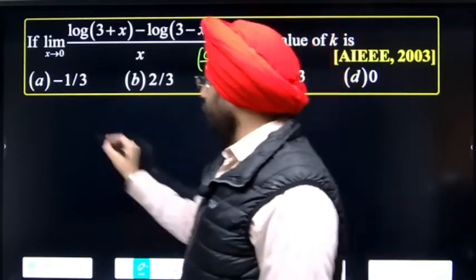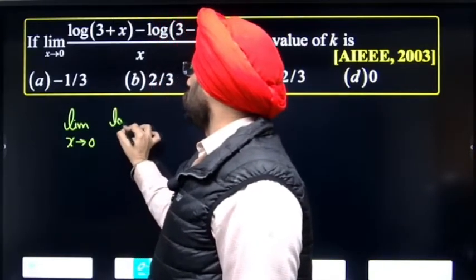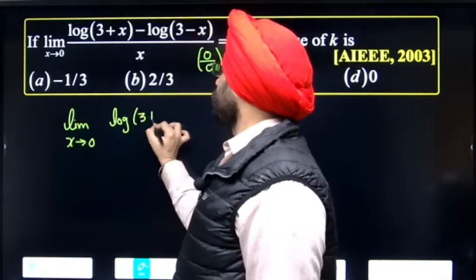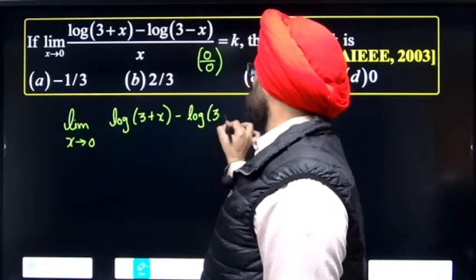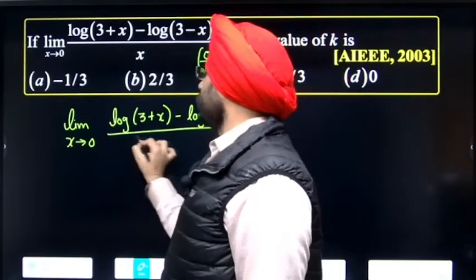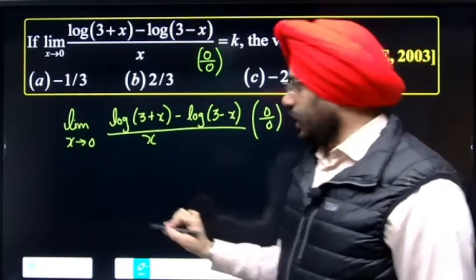The question given is 0 by 0 form: log of (3 plus x) minus log of (3 minus x) divided by x. Since we have 0 by 0 form, we use L'Hospital's Rule.